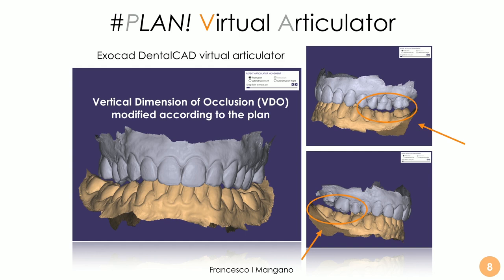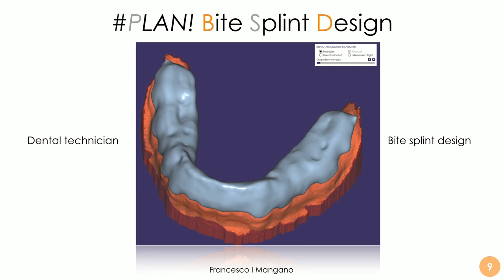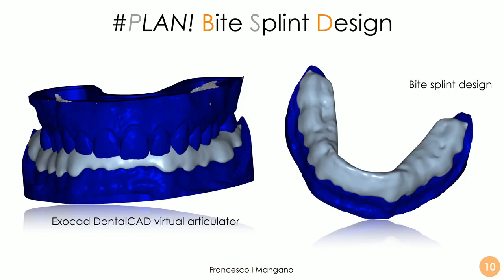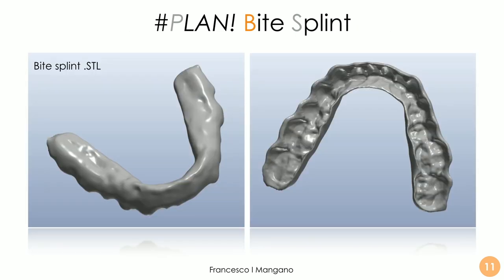In this simple case the dental technician designs a bite to relax the muscles, the masticatory system, and the jaw. The vertical dimension of occlusion is modified according to the plan, creating space for the bite. The bite splint is designed using the exocad software — a valuable tool also for bite splint design. Here is the bite splint in the exocad virtual articulator with the master model and antagonist. The STL files are checked from different perspectives before sending to the 3D printer.